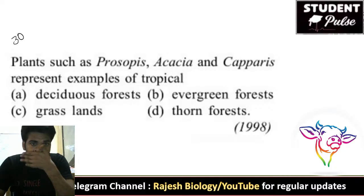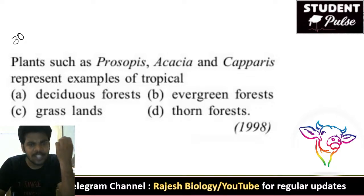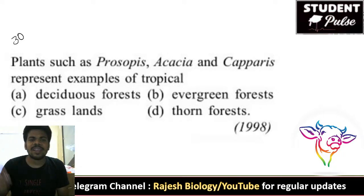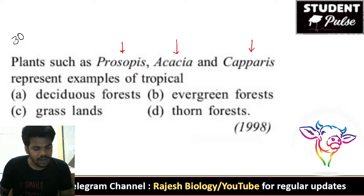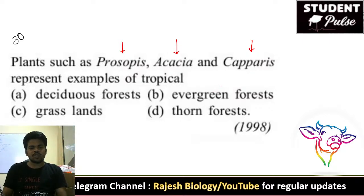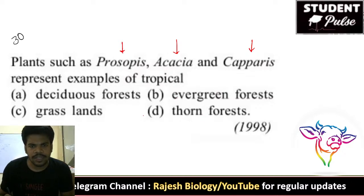Last question: plants such as Prosopis, Acacia, and Capparis represent examples of which type of forest? The right answer is tropical thorn forest. These plants are found in tropical thorn forests.